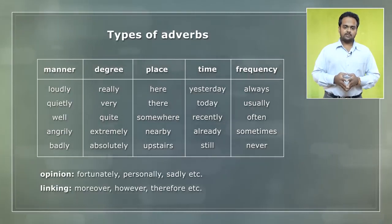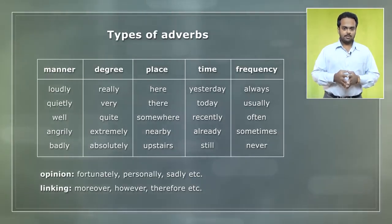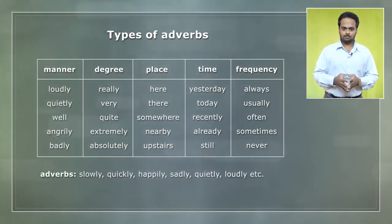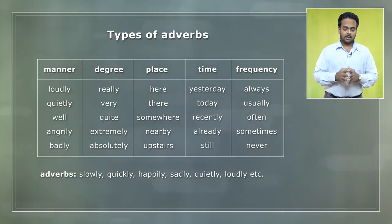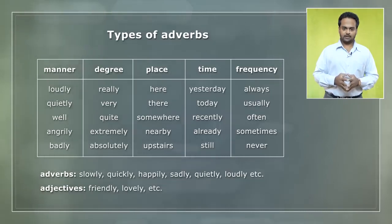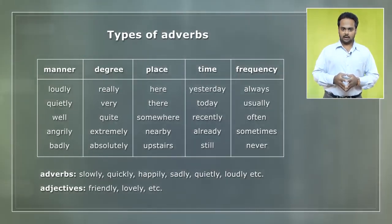I want to give you an important tip about words that end with -ly. When you say adverb, people generally think of words like slowly, quickly, happily, sadly, quietly, loudly, and so on. So it's easy to think that all adverbs end with -ly, but this is not true. In this chart you can see many examples of adverbs that don't end with -ly. Also, there are many adjectives that have this ending – words like friendly, as in she's a friendly person, or lovely, as in what a lovely bouquet. These are adjectives and not adverbs. So remember, many adverbs don't end with -ly, and some words that end with -ly can be adjectives.